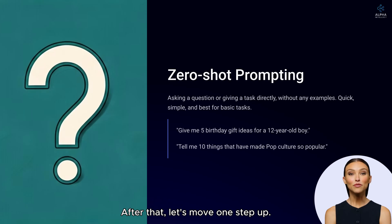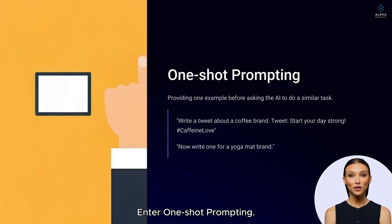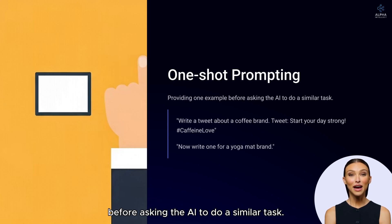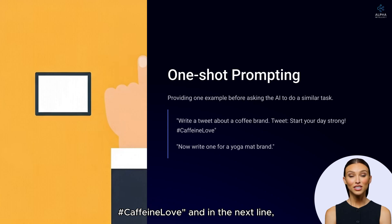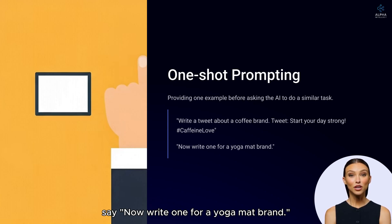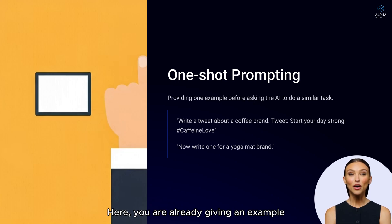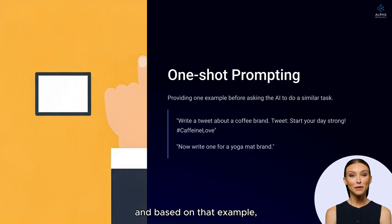Next, let's move one step up — one-shot prompting. This is when you give one example before asking the AI to do a similar task. For instance, you type: 'Write a tweet about a coffee brand. Tweet: Start your day strong. #CaffeineLove.' Then say: 'Now write one for a yoga mat brand.' Here you are giving an example via the coffee brand, and based on that, asking the AI to create a tweet about a yoga mat brand.